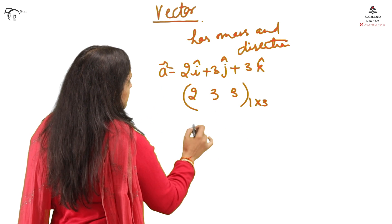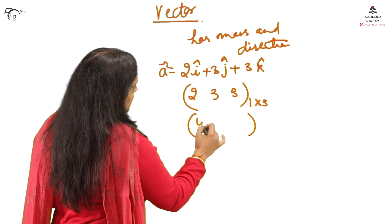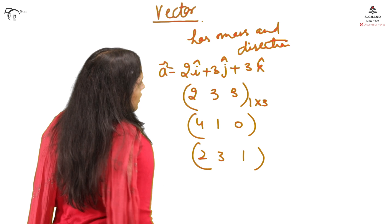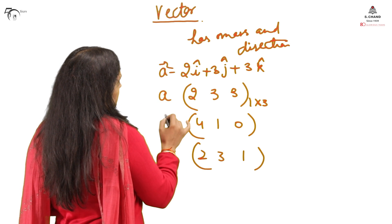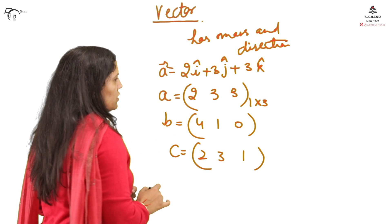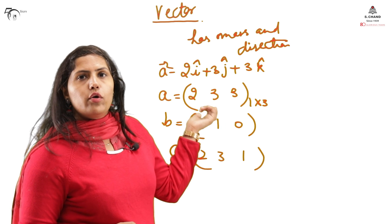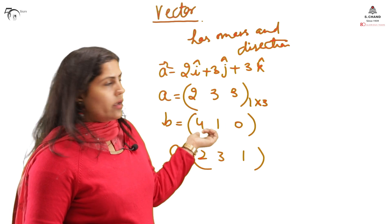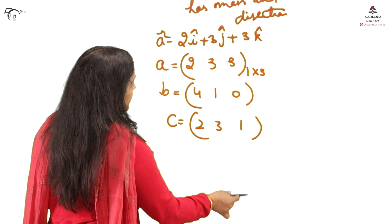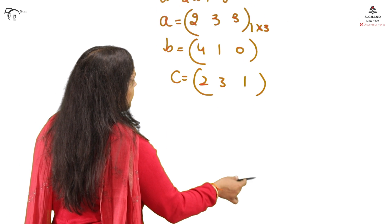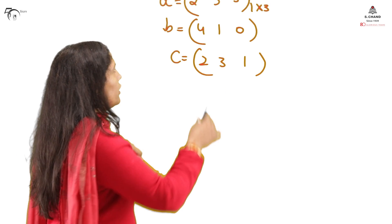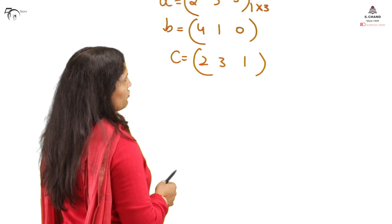Suppose we have three vectors: this is A, this is B, this is C. I want to check whether these vectors are linearly dependent or independent. There is a proper method for checking linear independence and dependence of vectors.